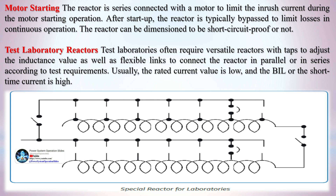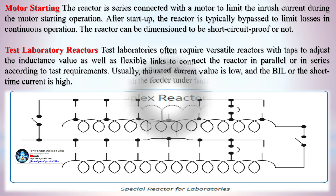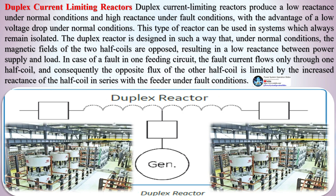Motor starting: the reactor is series connected with a motor to limit the inrush current during the motor starting operation. After startup, the reactor is typically bypassed to limit losses in continuous operation. The reactor can be dimensioned to be short-circuit proof or not. Test laboratories often require versatile reactors with taps to adjust the inductance value, as well as flexible links to connect the reactor in parallel or series according to test requirements. Usually the rated current value is low and the BIL or short-time current is high.